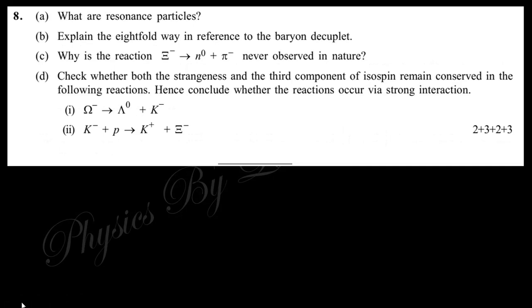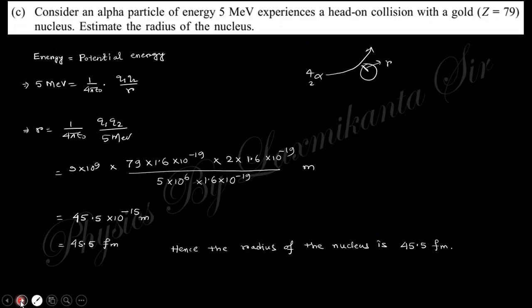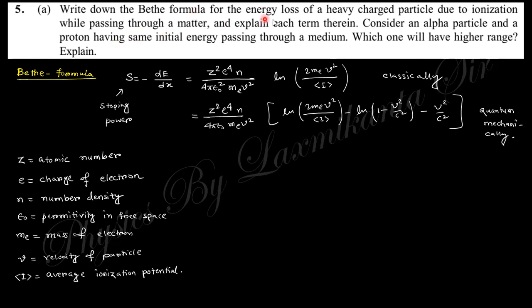Question 5 asks to write down the Bethe formula for energy loss of a heavy charged particle due to ionization while passing through matter. The Bethe formula gives the stopping power — energy loss per unit length. Classically and quantum mechanically the expressions involve Z (atomic number of medium), e (electronic charge), n (number density), ε₀ (permittivity of free space), m (electron mass), v (particle velocity), and I (average ionization potential).